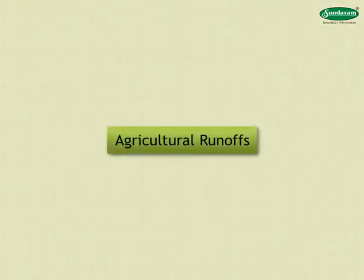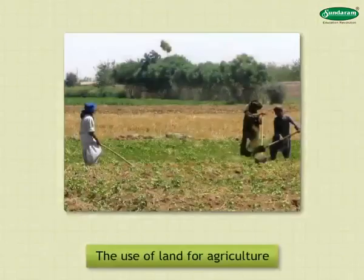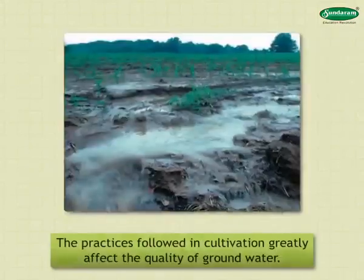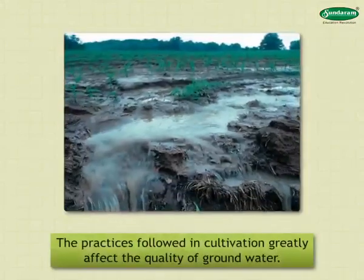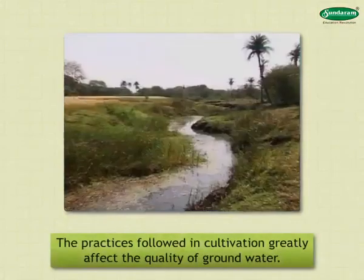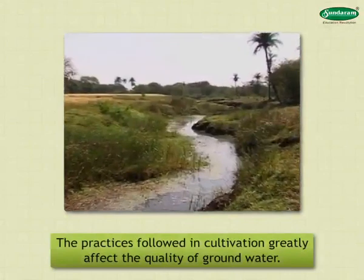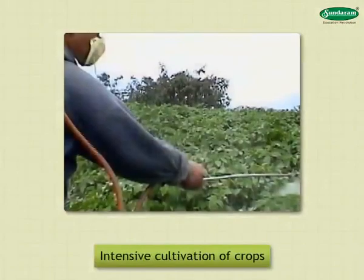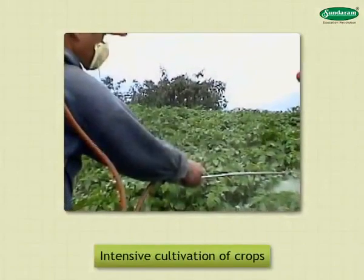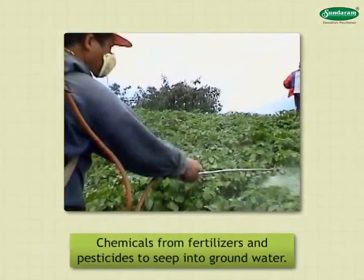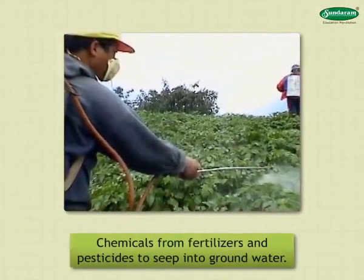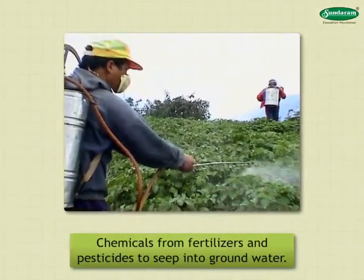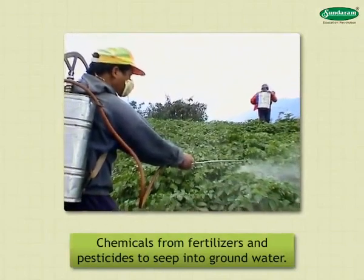Agricultural Run-off: The use of land for agriculture and the practices followed in cultivation greatly affect the quality of ground water. Intensive cultivation of crops causes chemicals from fertilizers and pesticides to seep into ground water.